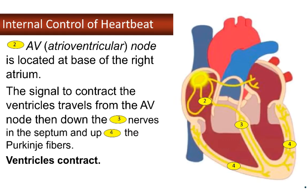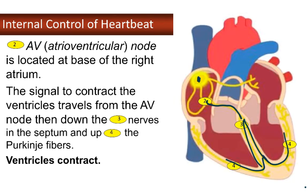So from number one — remember, the pacemaker, the sinoatrial node — the signal moves to the atrioventricular node, which is at the base of the right atrium. That signal for ventricular contraction then travels to the bundle of His and the Purkinje fibers, and then the ventricles contract.